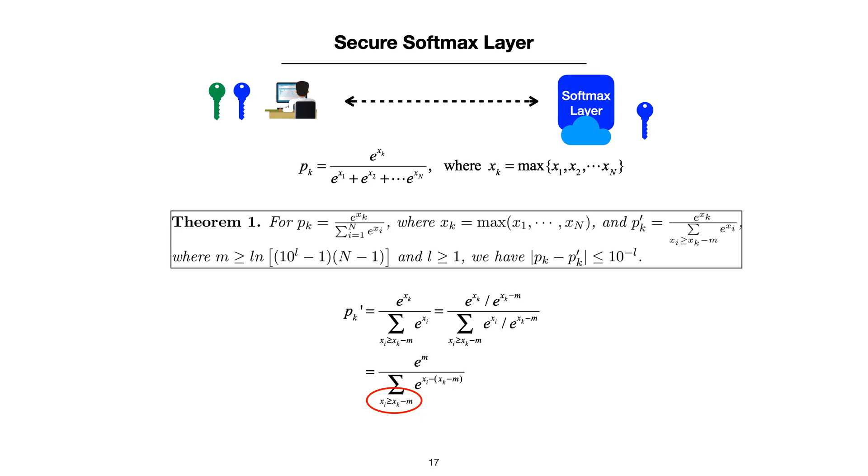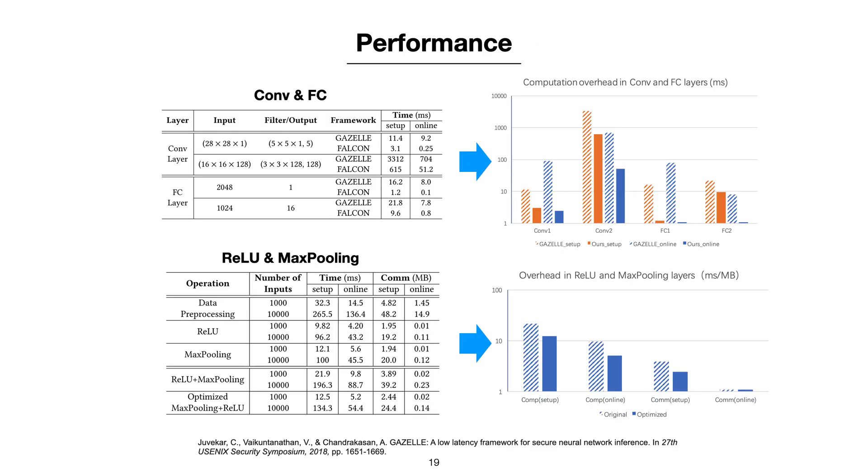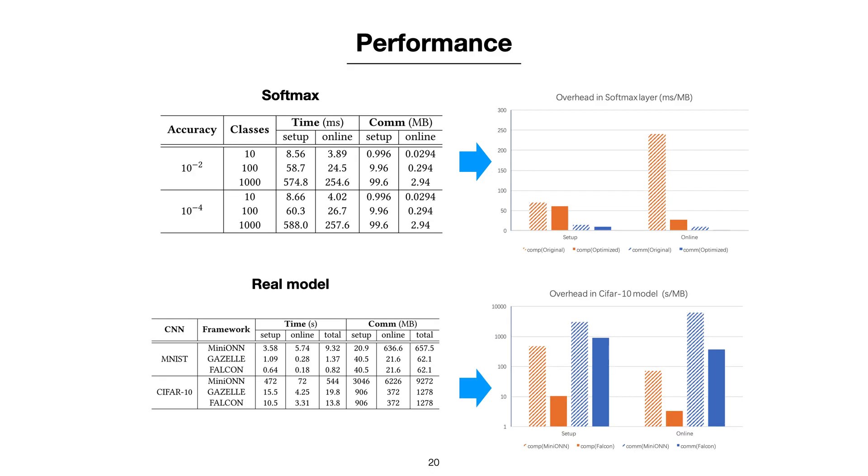You can find out more details in our paper and the proof in the supplementary material. Now the client could get the prediction result from the cloud and nothing is revealed during the prediction. From the experimental results, we can see that our results perform best compared with the previous papers in single layers as well as the whole model.